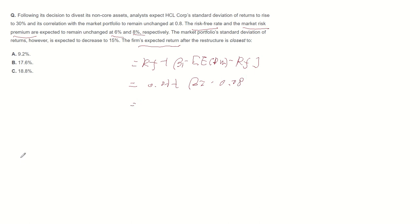We can calculate beta as correlation between stock and market multiplied by standard deviation of stock divided by standard deviation of market. The question provided this information: correlation between stock and market is 0.8, standard deviation of stock is 30%, 0.3, and standard deviation of market is 15%, 0.15. So we can calculate beta as 1.6.